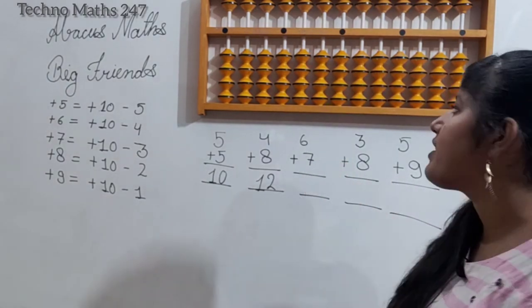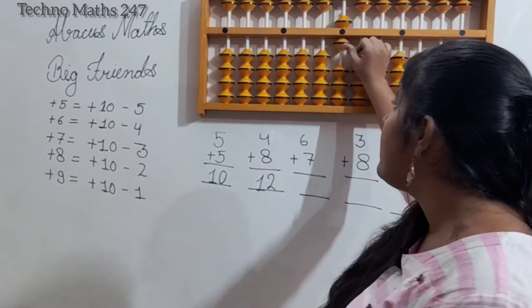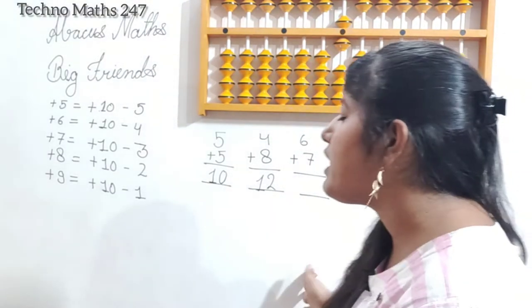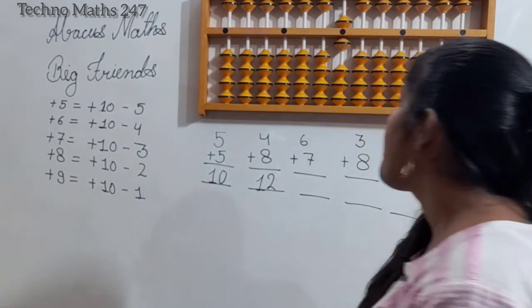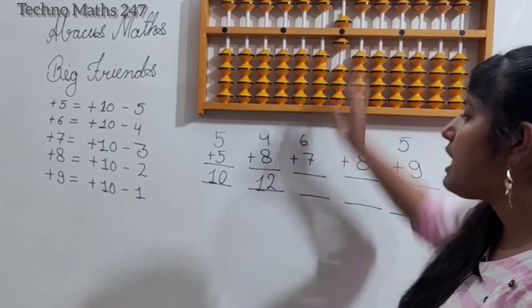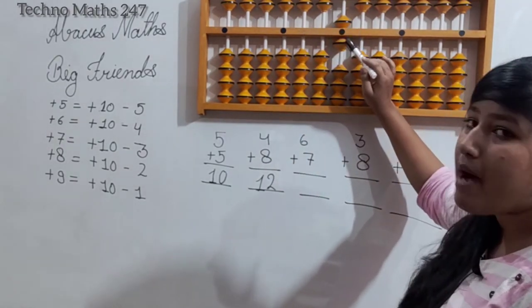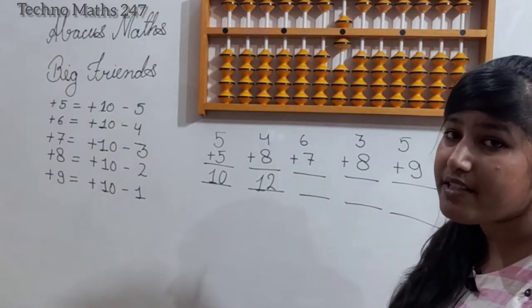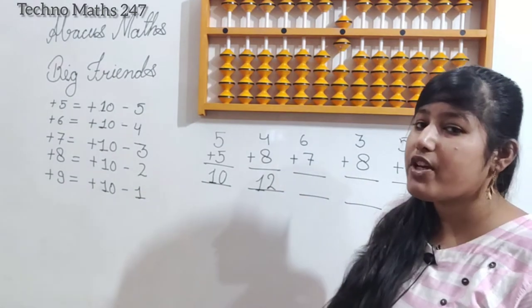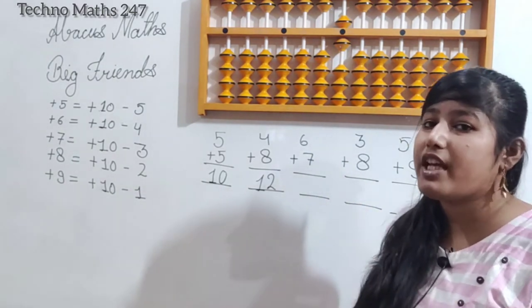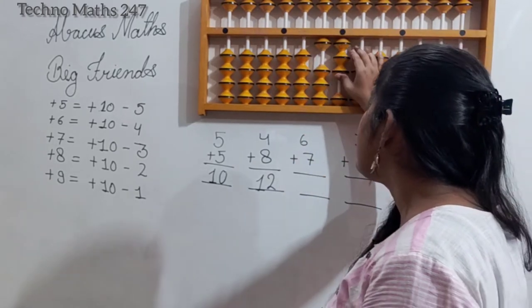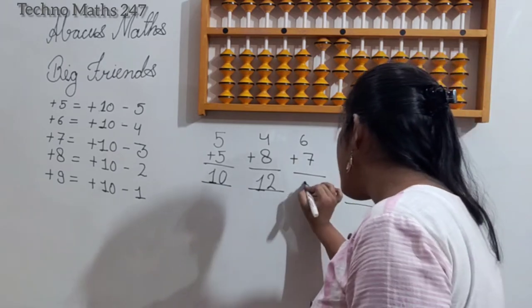Next question: plus 6 plus 7. We enter 6, which is 5 plus 1. Now for plus 7, we only have 3 remaining; we don't have 7. So we use the big friend: plus 10 minus 3. We apply plus 10, then we need to subtract 3, but we don't have 3 to subtract directly. We have learnt from small friends that subtraction is the opposite of addition — for plus 3 we use minus 2, so for minus 3 we add 2. So the answer becomes 1, 3 — that is, 13.